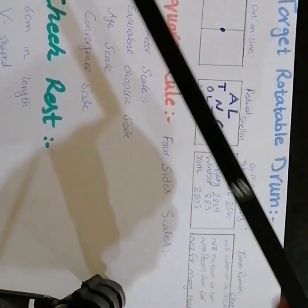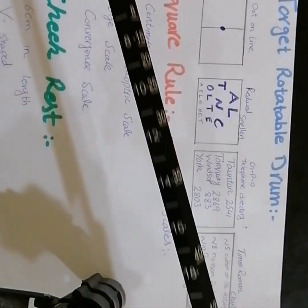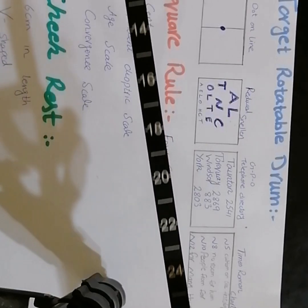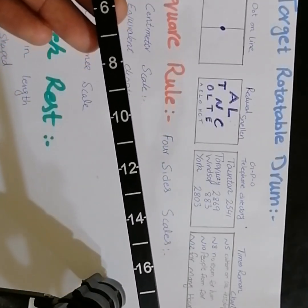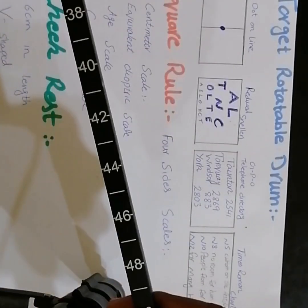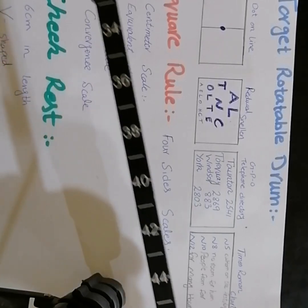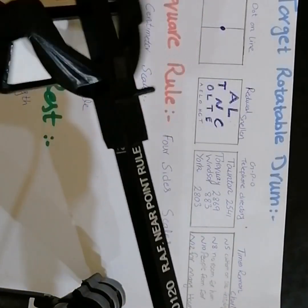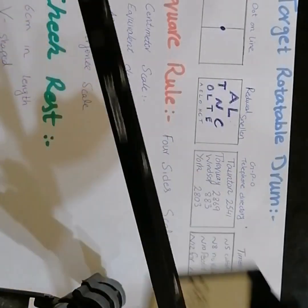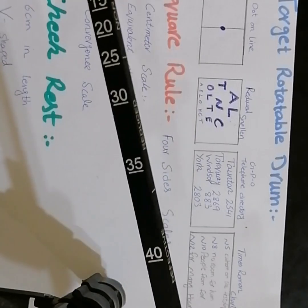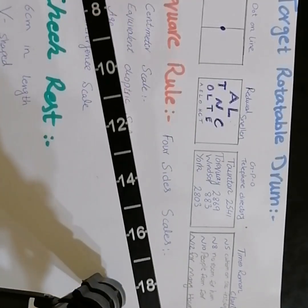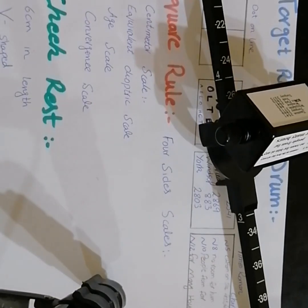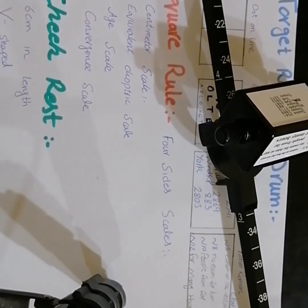The RAF Rule has a handle held by the examiner. The total length of the instrument is 50 centimeters. The centimeter scale starts from zero and goes up to 50 centimeters. In the next video, we will discuss the proper procedure for using the Royal Air Force Rule. Thank you so much.